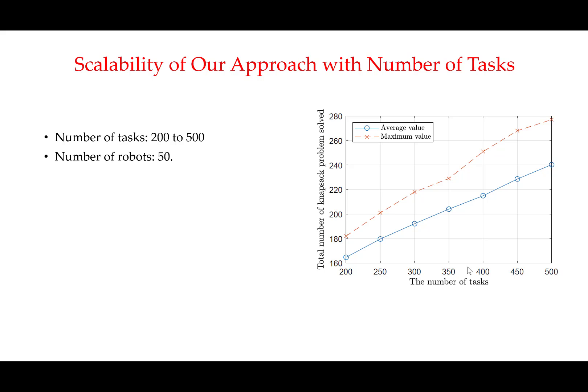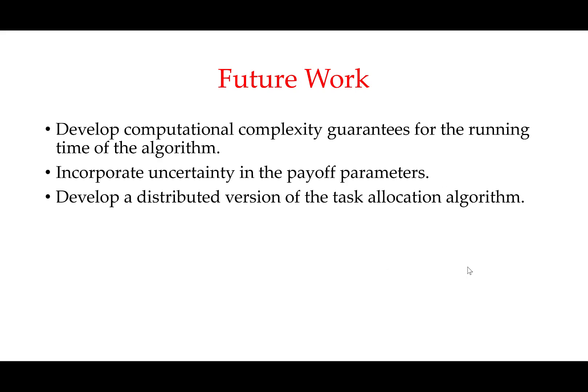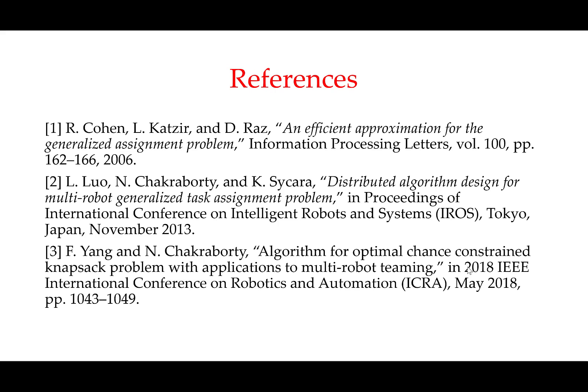In conclusion, we presented a novel algorithm for solving the chance-constrained generalized assignment problem by solving a sequence of deterministic knapsack problems. We proved that our algorithm has an approximation guarantee of 1 plus alpha, where alpha is the approximation ratio of the deterministic knapsack subroutine. Simulation results show that empirically the algorithm scales linearly with the number of tasks and robots. In future work, we would like to develop computational complexity guarantees for the running time, incorporate uncertainty in the payoff parameters, and develop a distributed version of the task allocation algorithm.